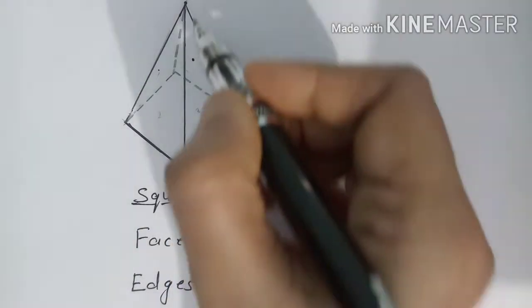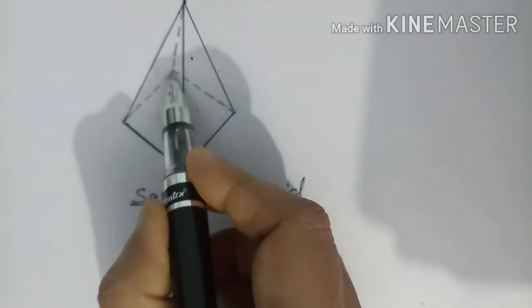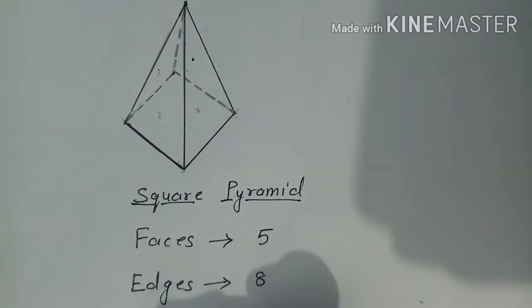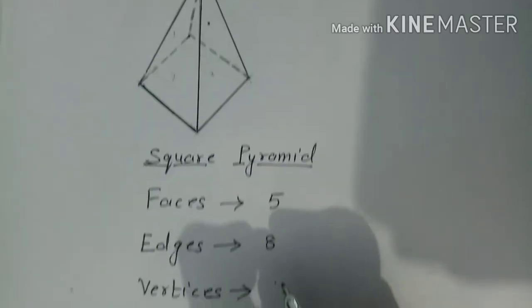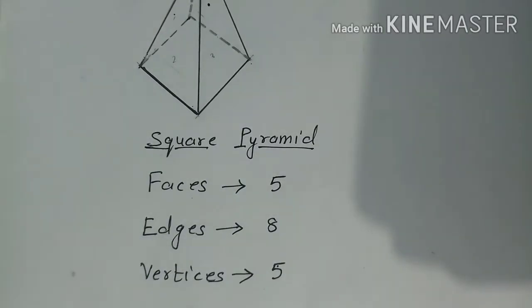Now come to the vortices. Vortices are points, corners. So first corner, second corner, third corner, fourth corner and fifth corner. Total vortices are five. And in this way we can find the total number of faces, edges and vortices of a solid.